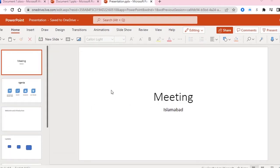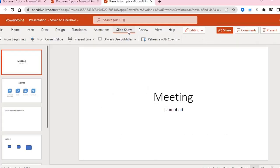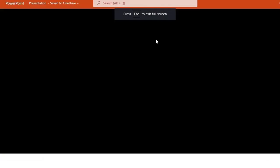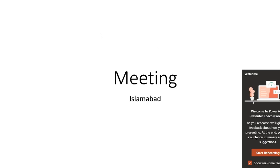Similarly, you can use this online version for another great feature, and that is Presenter Coach. Go to Slideshow, then Rehearse with Coach. You can do some rehearsal and basically if you turn on the camera, it will observe your body language. At the end it will give you a detailed report on whether you were presenting well. Click Rehearse with Coach — here it will ask you to use your microphone. Now click Start Rehearsing and click Show Real Time Feedback.